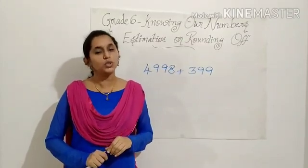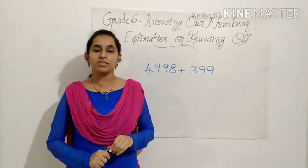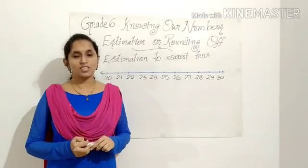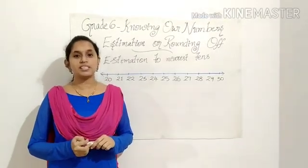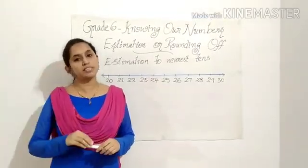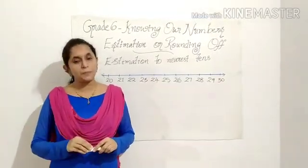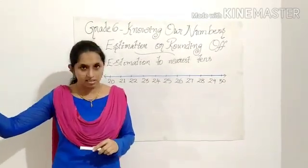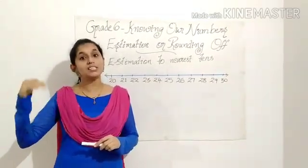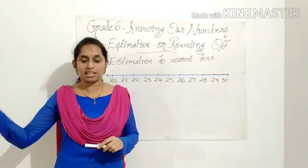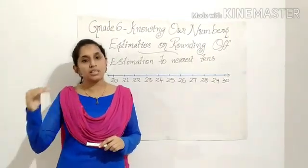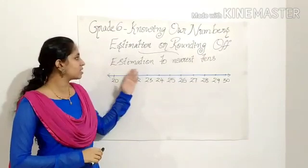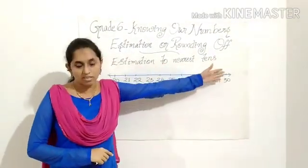By the end of this video you will also be able to do calculations very fast. In this topic we will study three categories of estimation: estimation to nearest tens, estimation to nearest hundreds, and estimation to nearest thousands. First, let us study estimation to nearest tens.